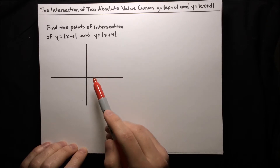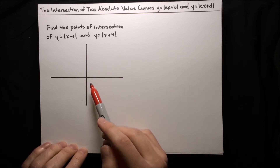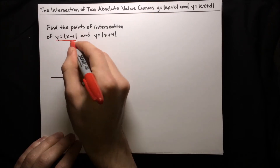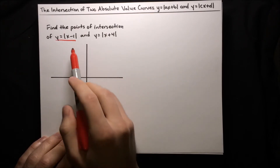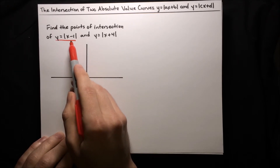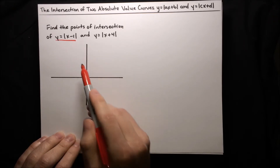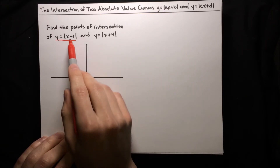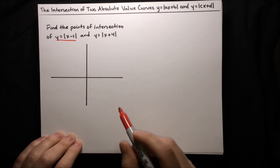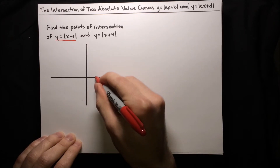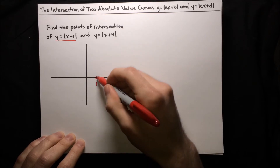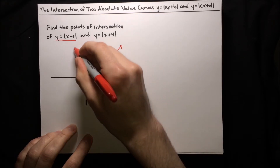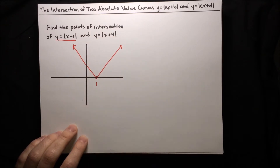To start off, let's get a visual idea of what's going on here by plotting these curves on a graph. Looking at that first curve, y equals absolute value of x minus 1, this is just a horizontal shift to the right of one unit. Normally the absolute value graph looks like a v going upwards, and now we're just going to shift that v over one unit to the right, so the bottom of the v starts at an x-coordinate of 1. There we go — it's shifted over one unit to the right.